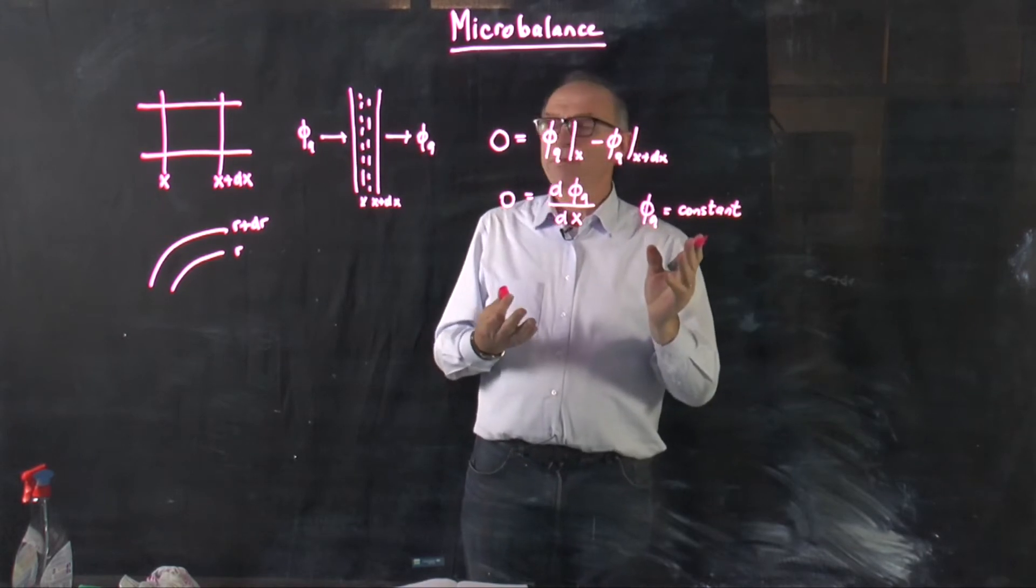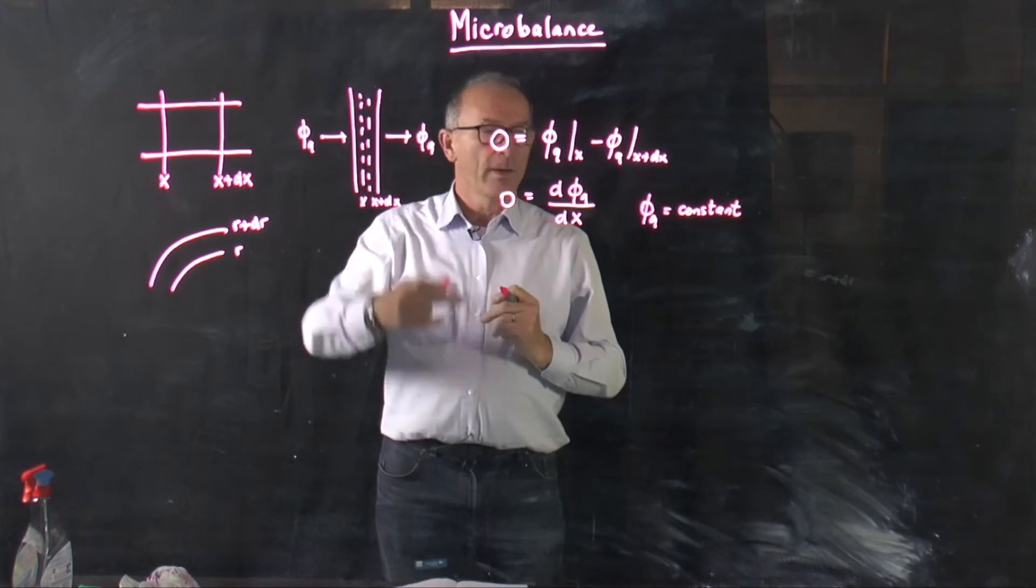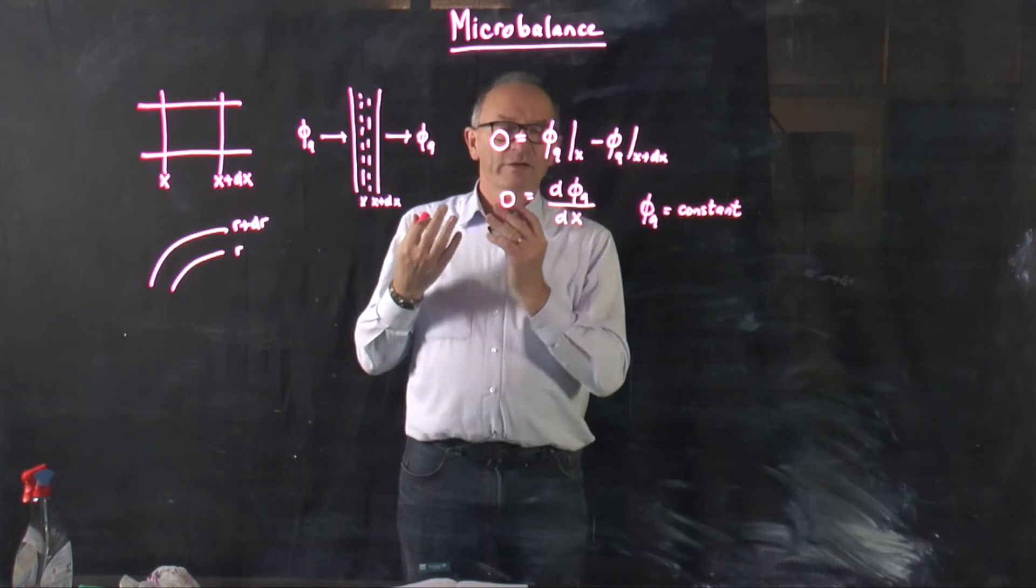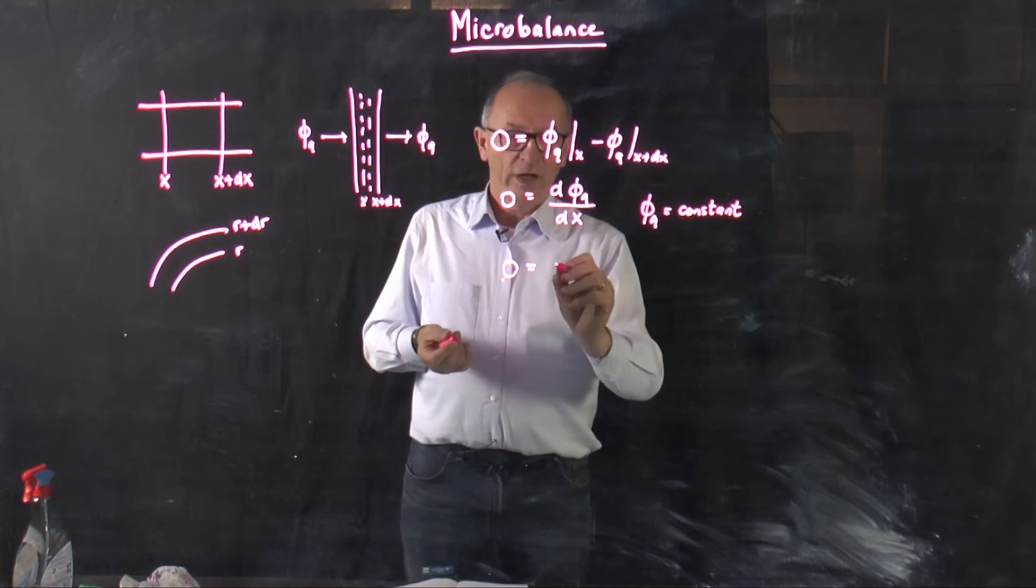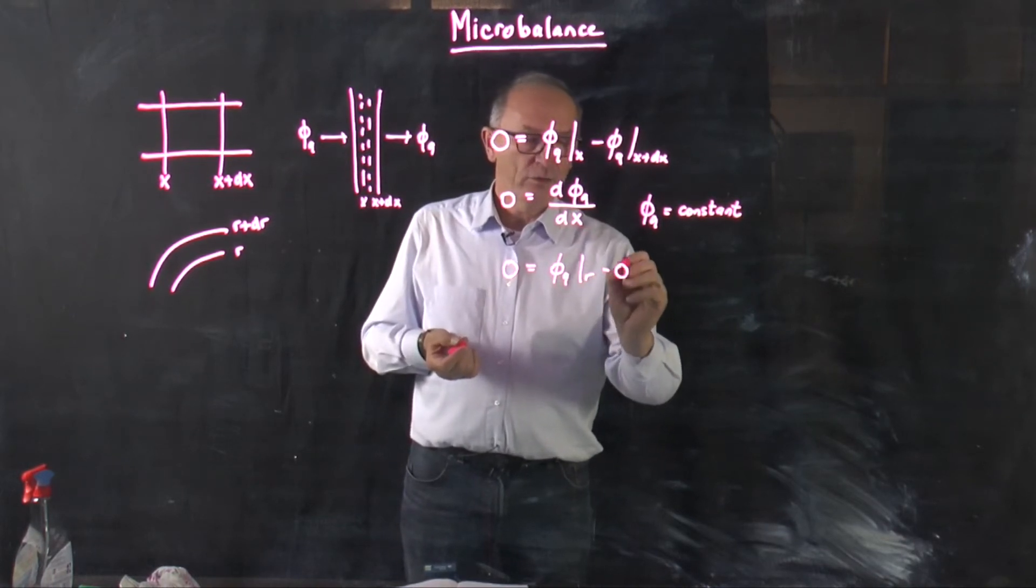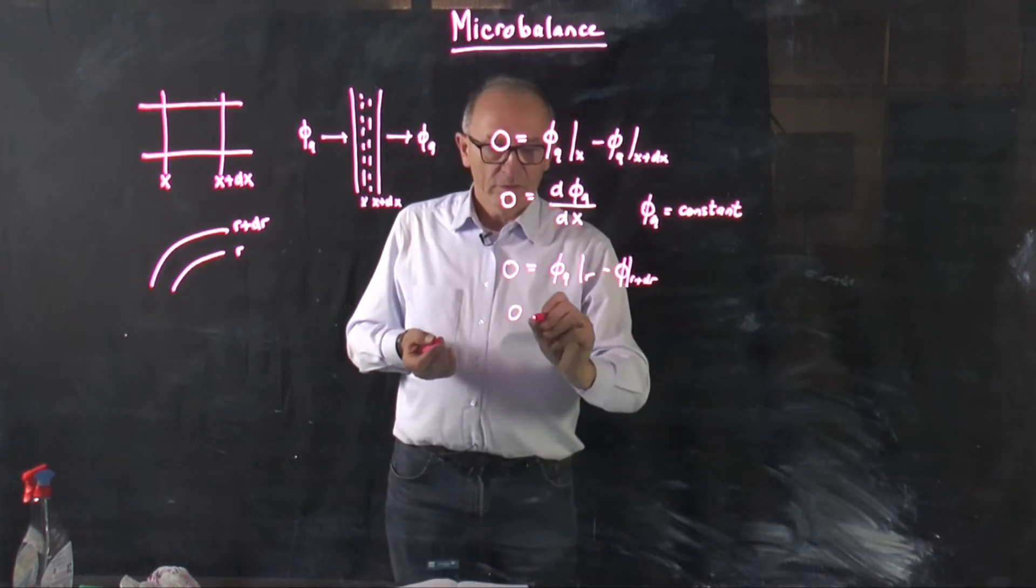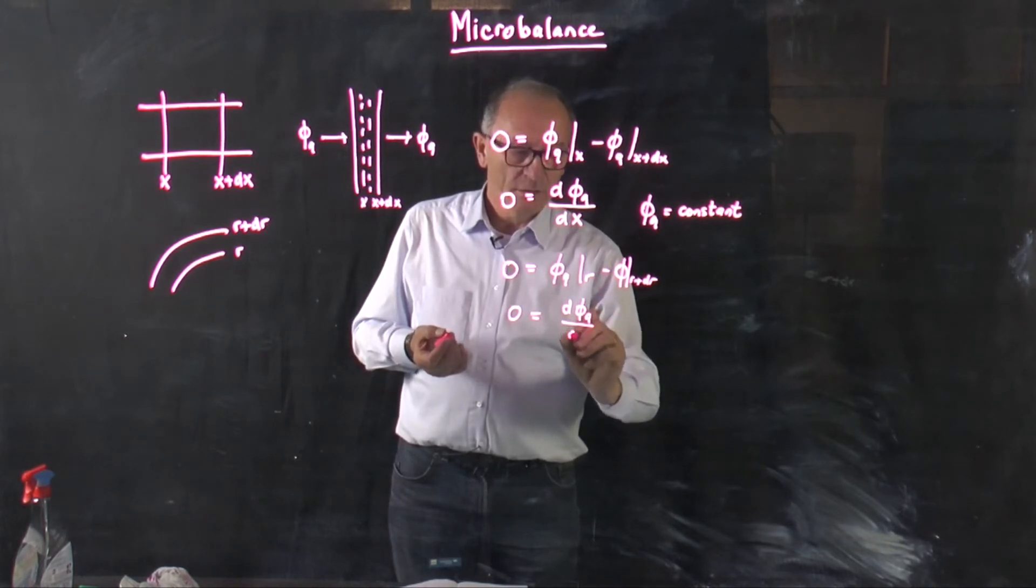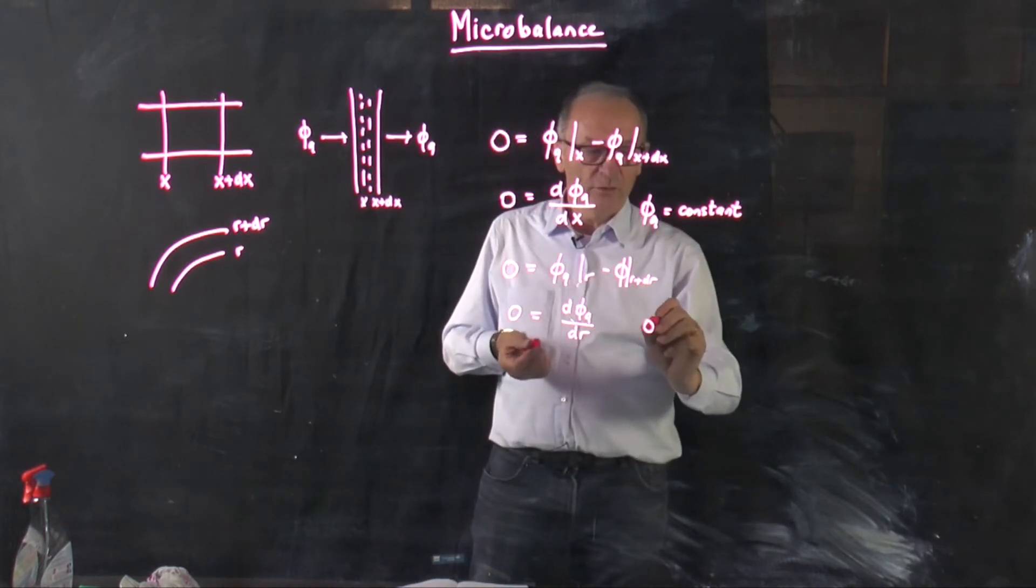This is not surprising because the heat which enters here should also leave here. In a similar way you could set up this balance also in cylindrical coordinates and this results in phi q on the place r minus phi q r plus dr which gives a relation of d phi q dr is zero. And in this case you get of course also phi q is constant.